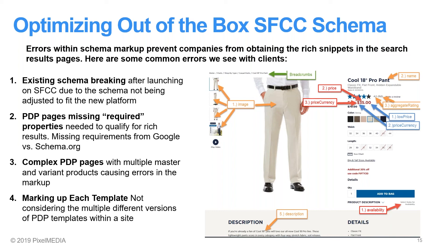Number one: existing schema breaking. Sometimes after launching on Salesforce Commerce Cloud, legacy schema is brought over to the new templates. This legacy schema doesn't always fit the new templates, so there are errors within the schema preventing the rich results from showing in Google.